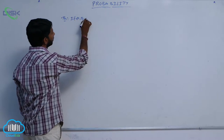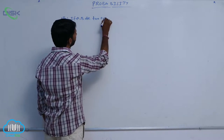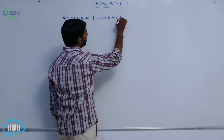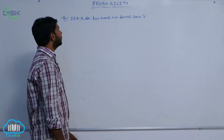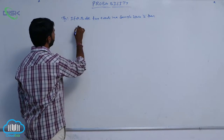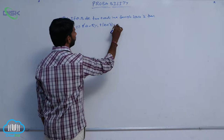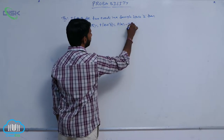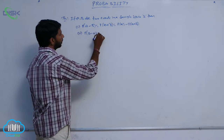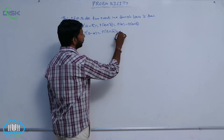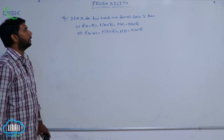If A and B are 2 events in a sample space, then P of A minus B, or P of A intersection B bar, is equal to P of A minus P of A intersection B. And the second one: P of B minus A, or P of B intersection A bar, is equal to P of B minus P of A intersection B.